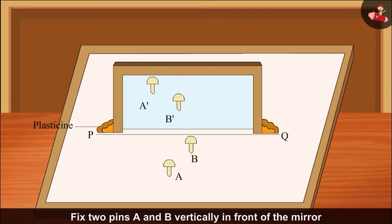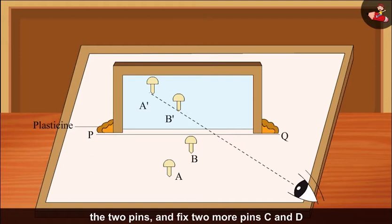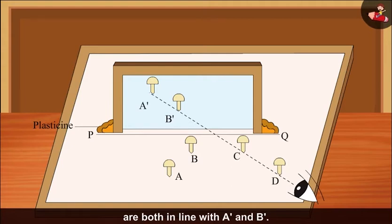Fix two pins A and B vertically in front of the mirror. Looking from the side Q, try to locate the images A' B' of the two pins and fix two more pins C and D on the paper in front of the mirror so that they are both in line with A' and B'.